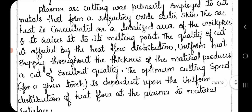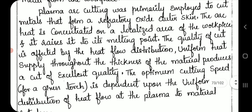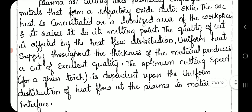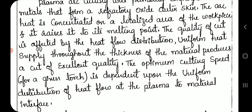Plasma arc cutting was primarily employed to cut metals that form a refractory oxide outer skin. The arc heat is concentrated on a localized area of the workpiece and raises it to its melting point. The quality of cut is affected by the heat flow distribution; uniform heat supply throughout the thickness of the material produces a cut of excellent quality.